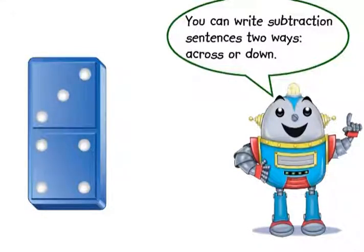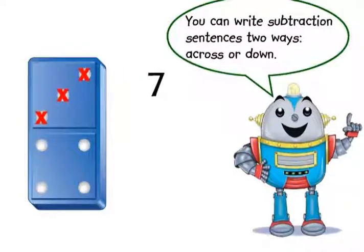We know that there are seven dots, so we write the seven first. We subtracted three dots, so write the three below the seven, with the minus sign in front of the three.